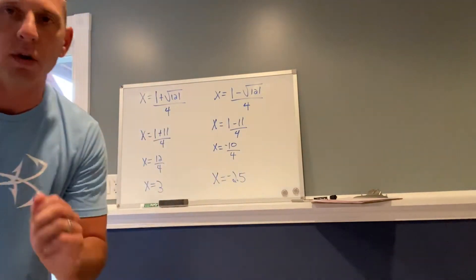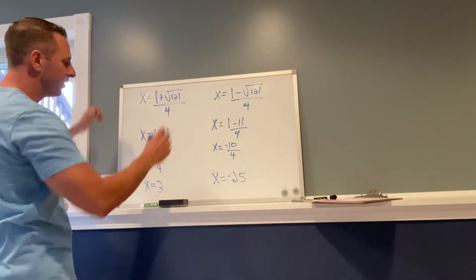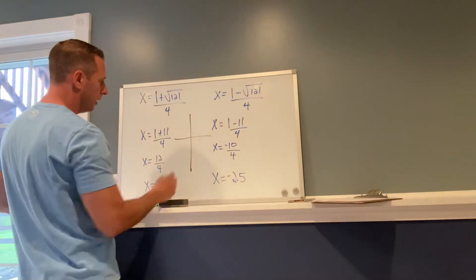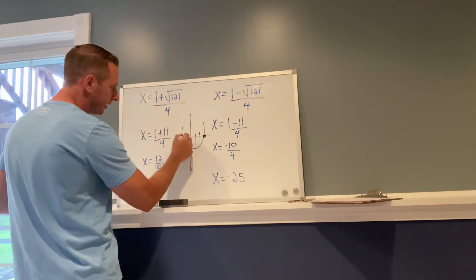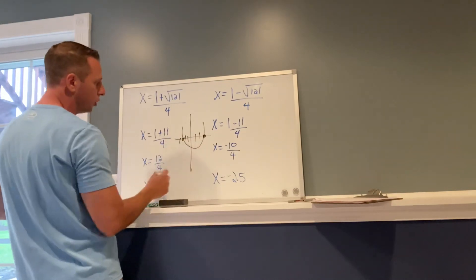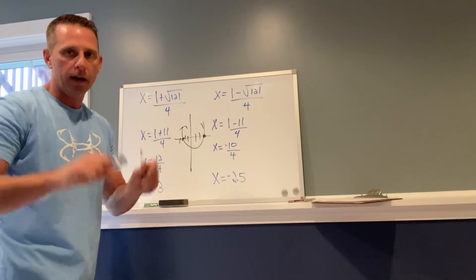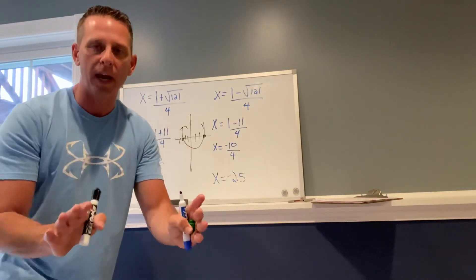All right, I raced through that just to show you the first example. We have two solutions. If we were going to graph this parabola, they would intersect right there at 3 on the x-axis and right there at negative 2.5. Those would be our x-intercepts. All right, don't be scared. Watch the next video, I'll slow down, it'll make more sense.